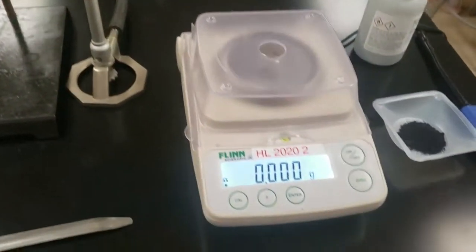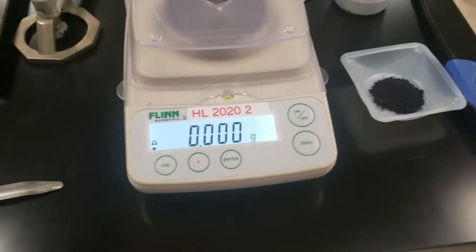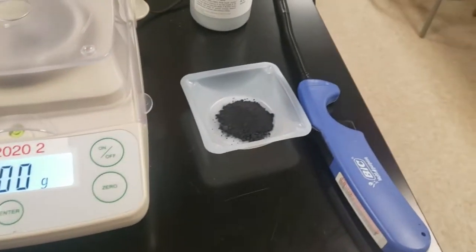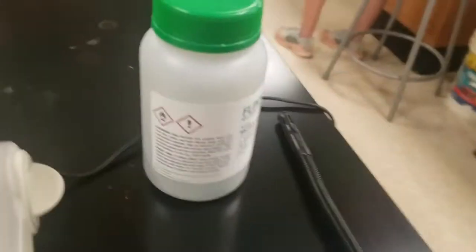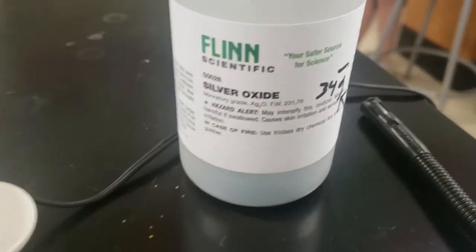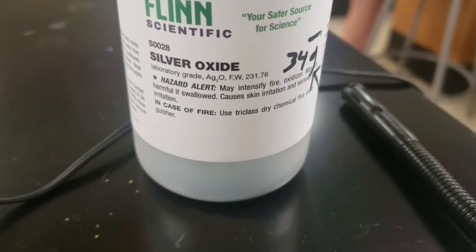You'll need a scale that measures to the thousandth of a gram or a milligram scale. This black stuff is silver oxide. Don't forget to read the hazards on it. It's slightly expensive, so don't waste it.